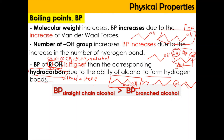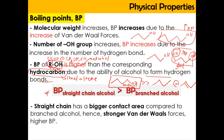The boiling point of straight chain alcohol is higher than that of branched alcohol. This is the same concept as in hydrocarbons: a straight chain has a larger contact surface area, which allows stronger van der Waals forces to form, resulting in a higher boiling point.